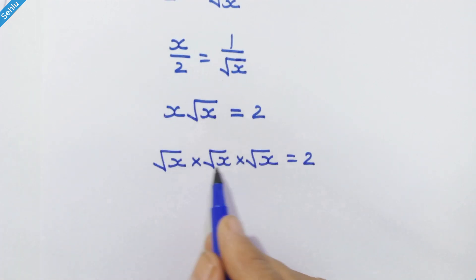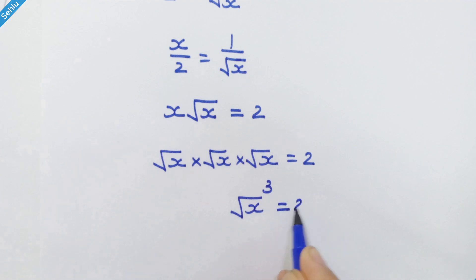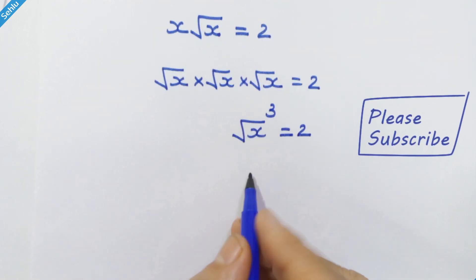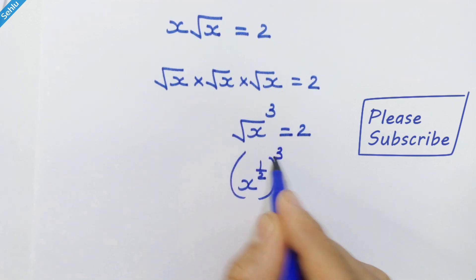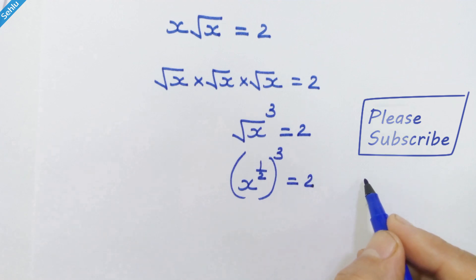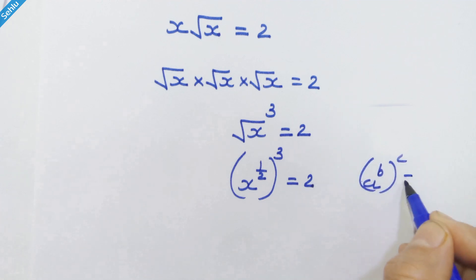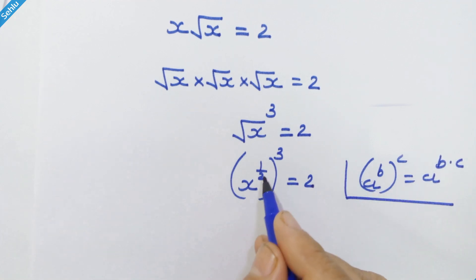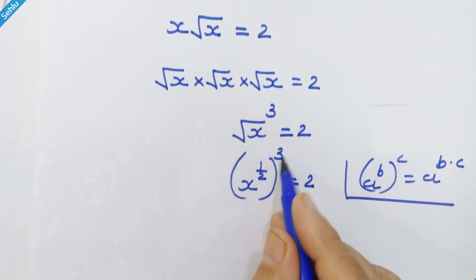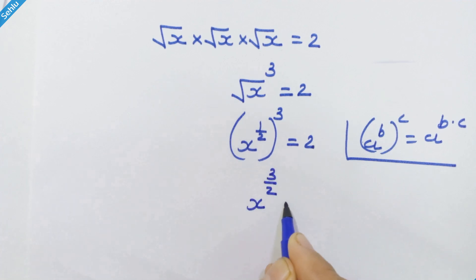Square root of x into square root of x into square root of x can be written as square root of x cubed, which equals 2. So x raised to 1 upon 2, whole cube, equals 2. Recalling the rule: a raised to b, whole raised to c, equals a raised to b into c. So multiplying the powers, we have x raised to 3 upon 2 is equal to 2.